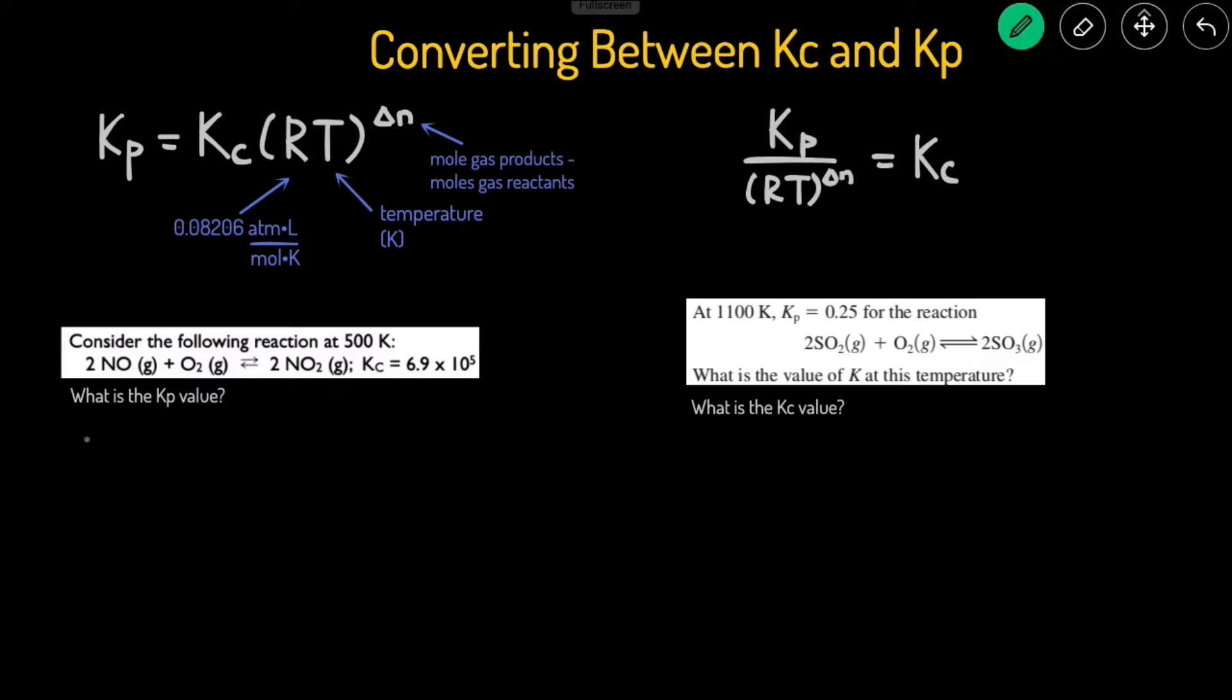Since we're trying to figure out the Kp value, we're going to use this left equation. Kp equals Kc 6.9 times 10 to the power of 5 multiplied by R, which is 0.08206 times the temperature, which is 500 degrees Kelvin, and then raised to the power of delta N. So we have 2 moles of gas on the product side, and we have a total of 2 plus 1, 3 moles of gas on the reactant side.